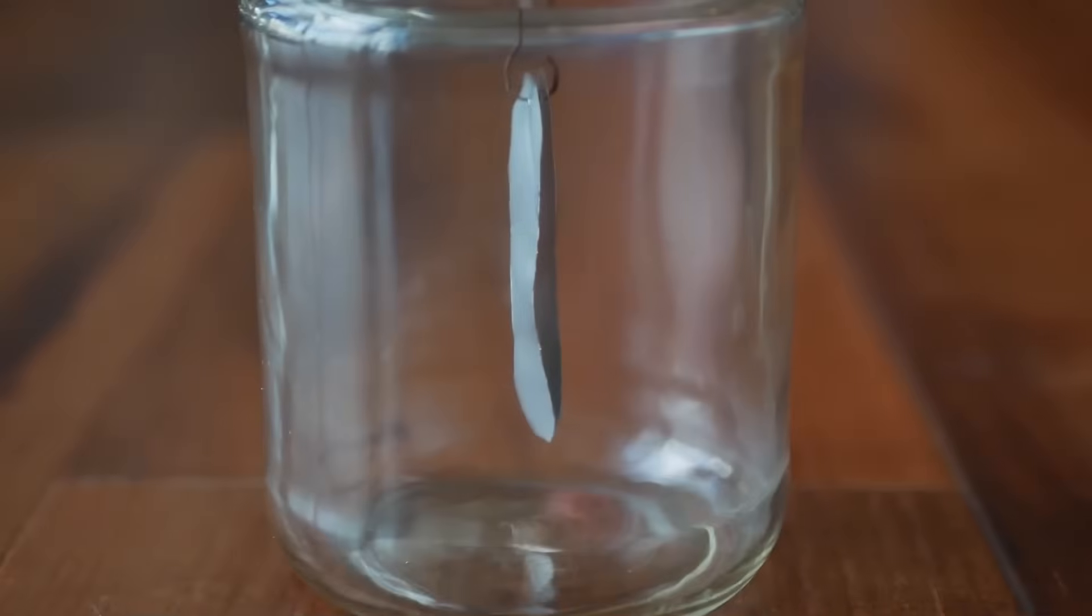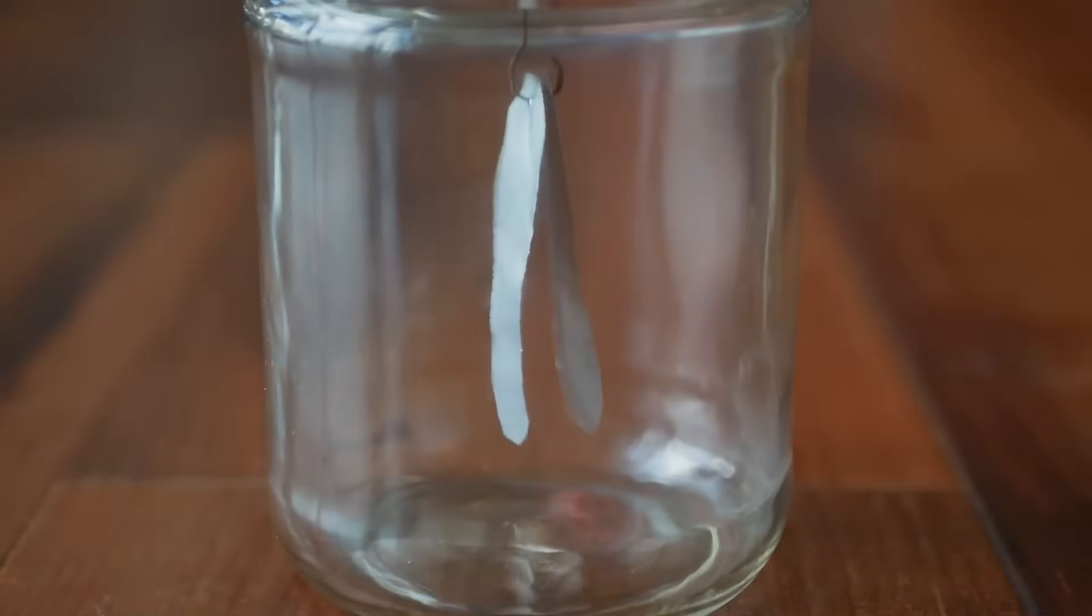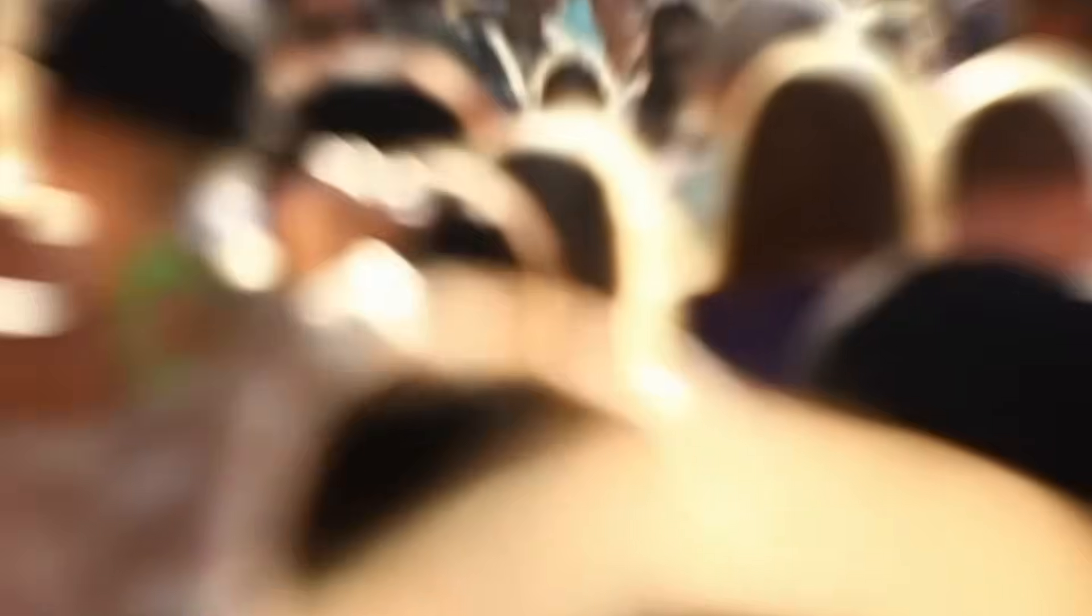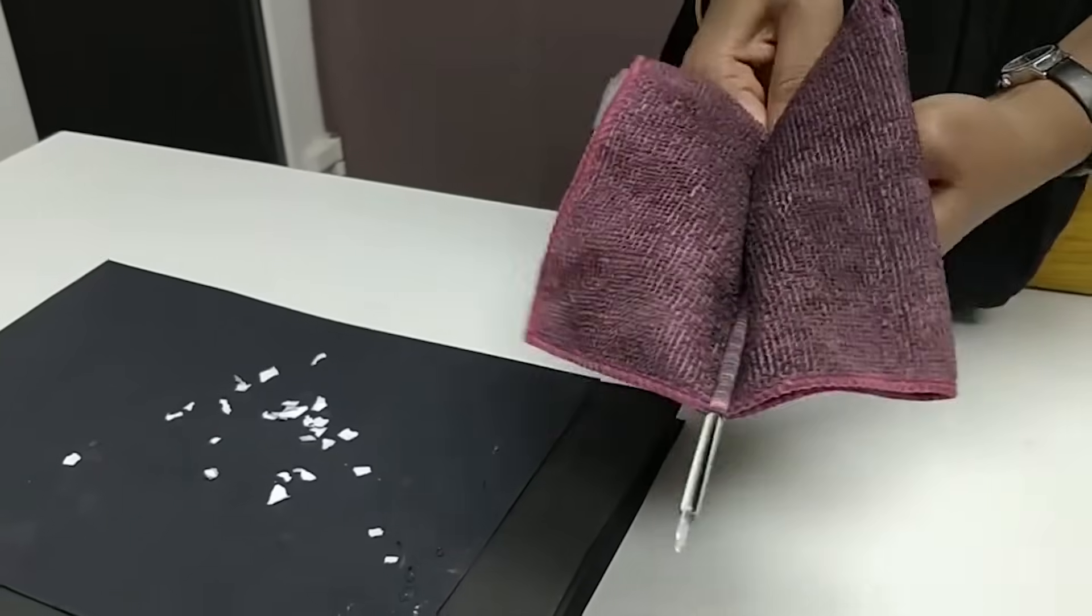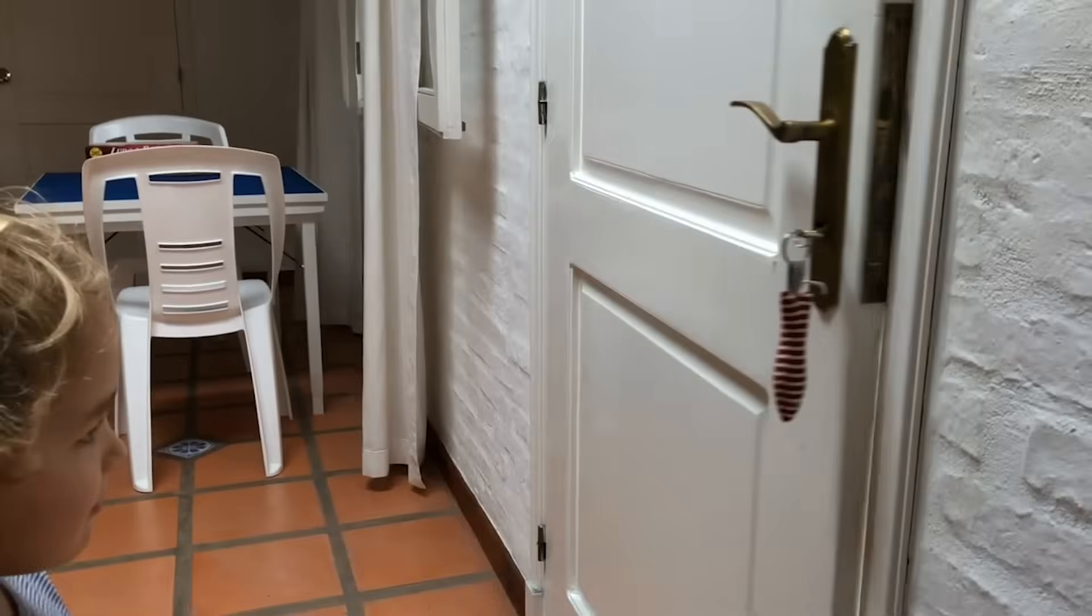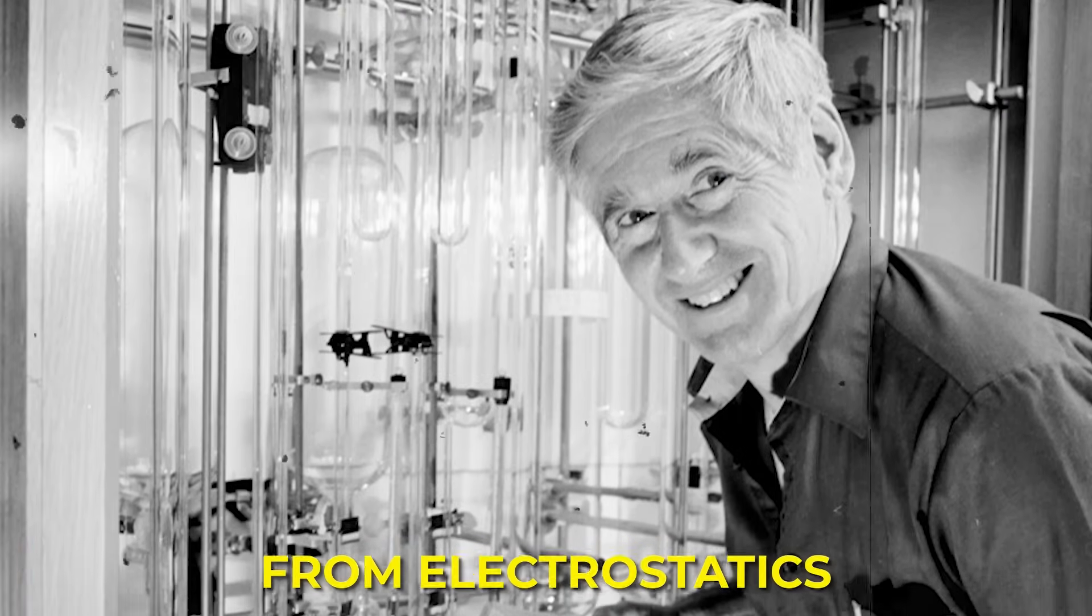The rules are simple. Charges that are alike push away from one another, while charges that are opposite pull together. These rules create countless small effects in everyday life. A plastic rod rubbed with a cloth can pick up paper scraps. A doorknob might shock someone on a dry day. Even the dust pattern on old screens comes from electrostatics.